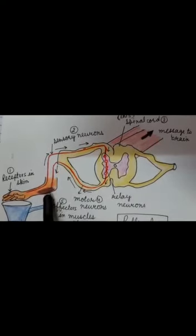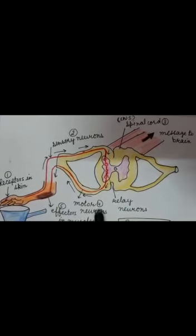Next is motor neurons — these transmit the impulse from the central nervous system to the effector organs. Last are the effector organs, which can be muscles, glands, or organs activated by motor neurons to produce a suitable response to the stimulus. These are the five components of the reflex arc.